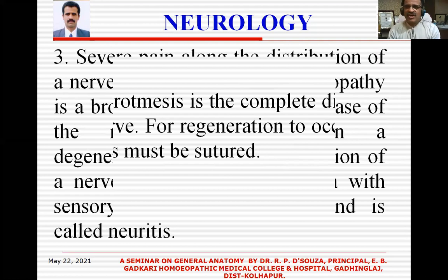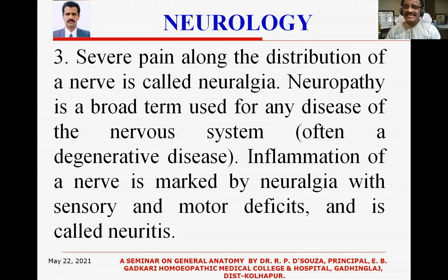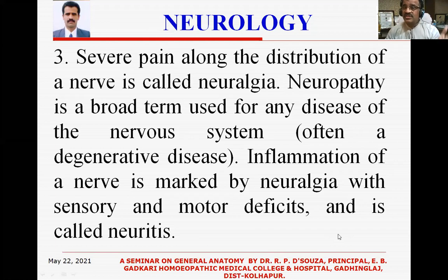Severe pain along the distribution of a nerve is called neuralgia. Neuropathy is a broad term used for any disease of the nervous system — all nervous system diseases are included in neuropathy, and often degenerative diseases are called neuropathic diseases. Inflammation of a nerve is also marked by neuralgia with sensory and motor deficits, and is called neuritis — for example polyneuritis.